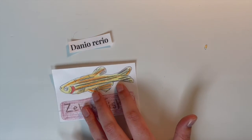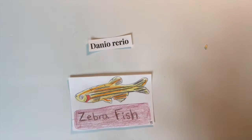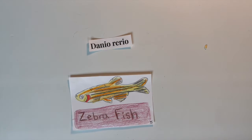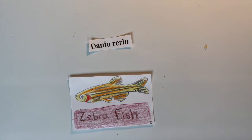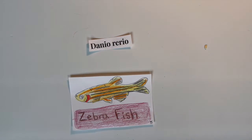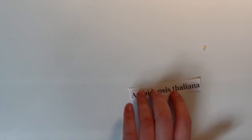Another model organism is the zebrafish or Danio rerio. These are good model organisms because their embryos develop externally and are transparent, meaning that they can be viewed and manipulated at all stages. This model organism can be used for genetic analysis and has a generation time of two to three months and can produce up to 200 eggs a week.